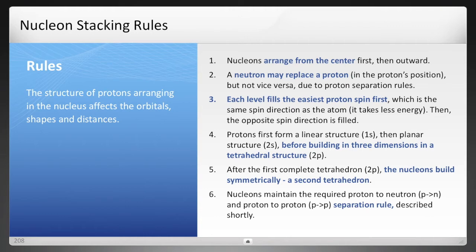It begins building a linear structure, then planar, and then finally a three-dimensional object beginning with the first P orbital. Next is that it will build a tetrahedron, but then it has to be symmetrical. We're going to find that after the first completion of the 2P orbital. And lastly, nucleons require a certain separation between proton and neutron, and then also between proton to proton, and that's discussed separately in a different slide.